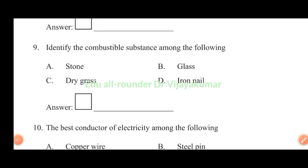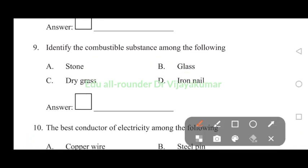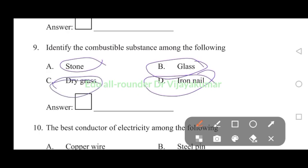Identify the combustible substance among the following: stone, glass, dry grass, iron nail. Stone is not combustible, glass is not combustible, iron nail is not combustible. Dry grass is combustible. Answer C is the right answer.